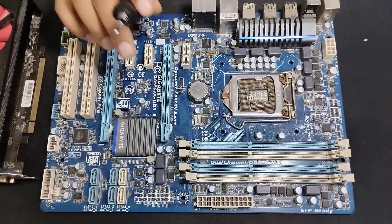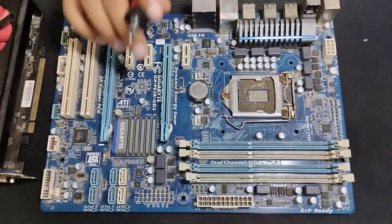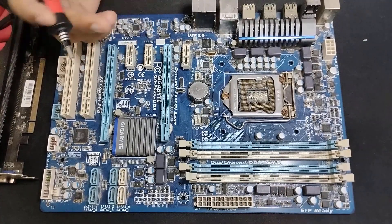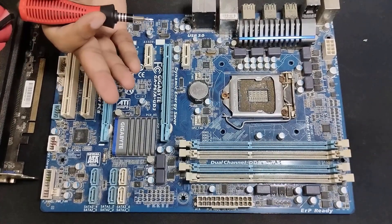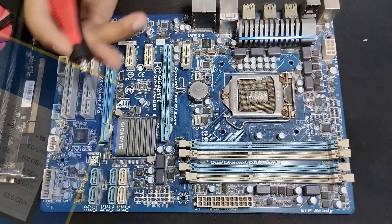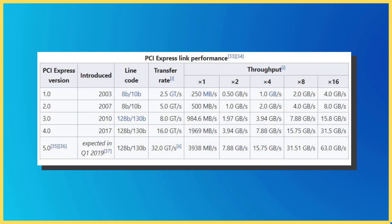The version of the PCI interface matters a lot. A single PCI lane doubles its transfer speed with each newer version. Have a look at this table. You can see that the X4 slot conforming to version 3.0 has a bandwidth of above 4GB per second, whereas the same slot conforming to version 4.0 would have a bandwidth of double the amount, or 8GB per second.